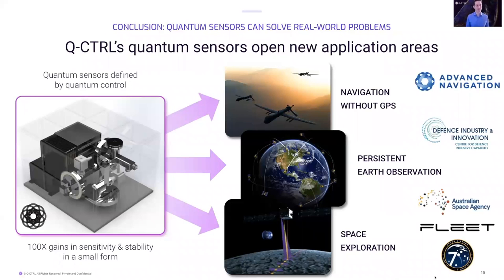This brings us to the end of part one of this webinar. We have seen how quantum atomic sensors provide sensitive measurements and long-term stability unachievable with conventional sensors, and how this unlocks new capabilities in navigation and persistent Earth observation. If you are interested in knowing more about how quantum sensors directly impact these applications, please get in contact with one of our team members.